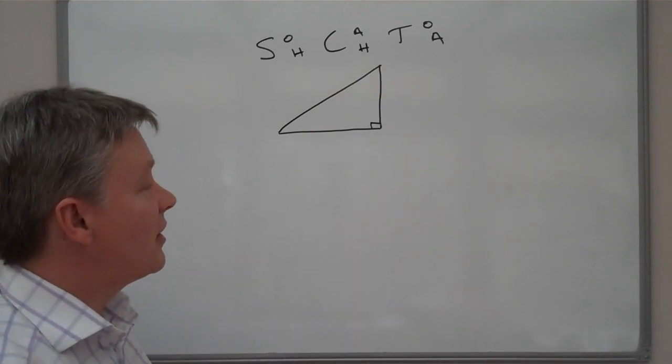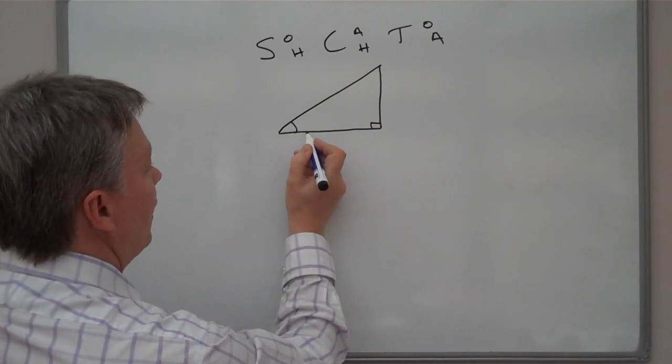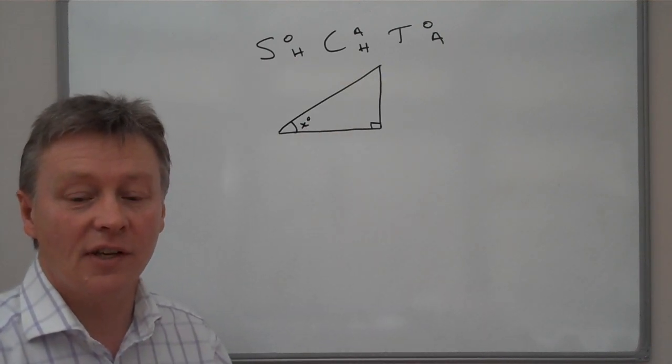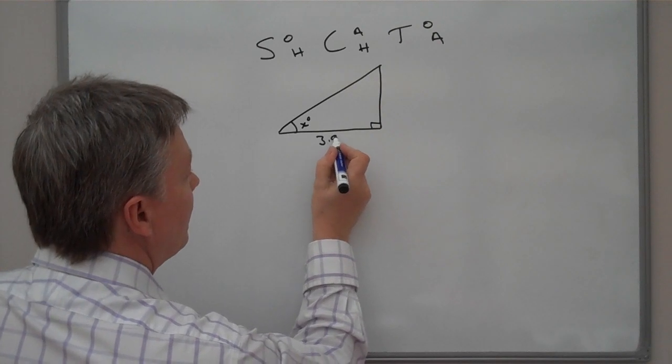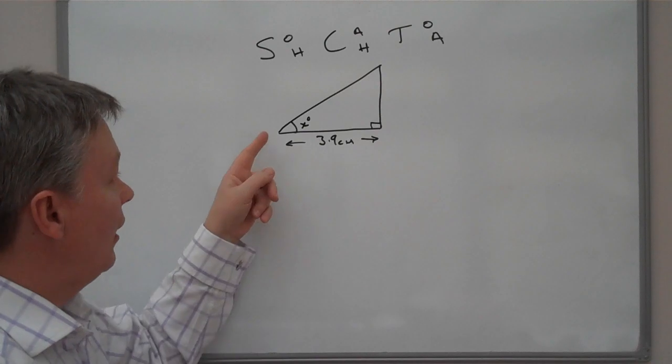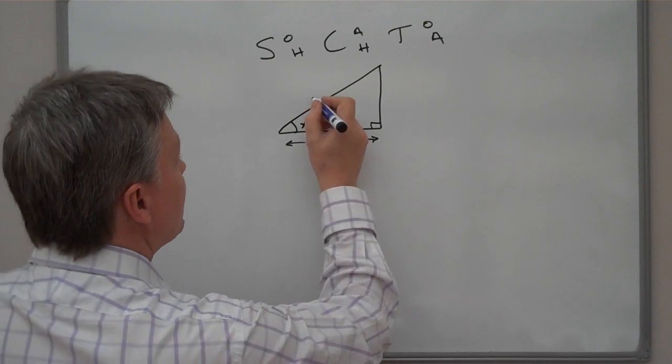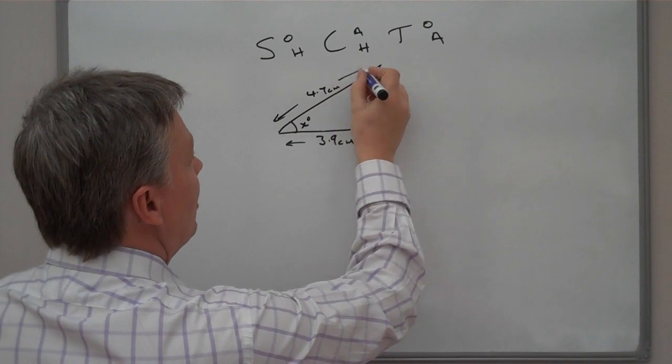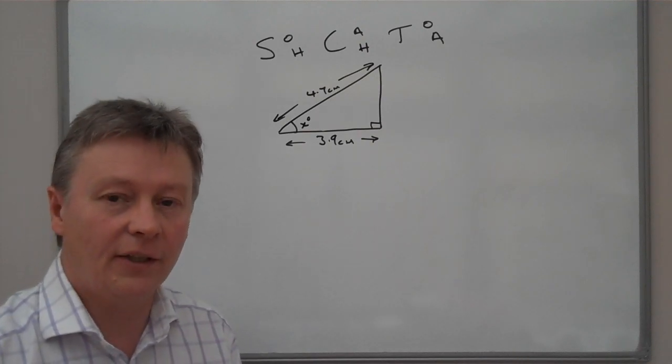The example I'm going to use is a right angle triangle. The particular exam question that we've got will ask us to find out the angle here which they've called x degrees. The information that they've given to us is that the bottom line across here is 3.9 centimeters, and the line across the top here, the longest line of the triangle, is actually 4.7 centimeters.